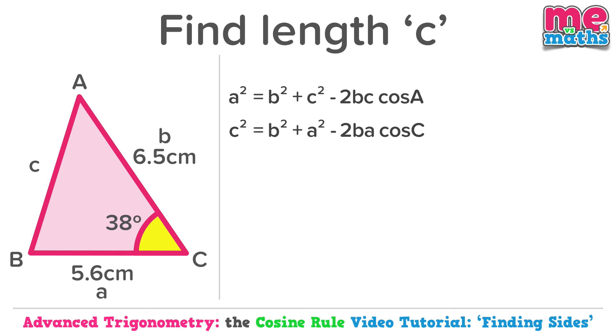We said we'd swap the C's and the A's. So a squared became c squared. b squared stayed exactly as it was. c squared was switched to a squared. 2bc became 2ba, and cos of angle A became cos of angle C.